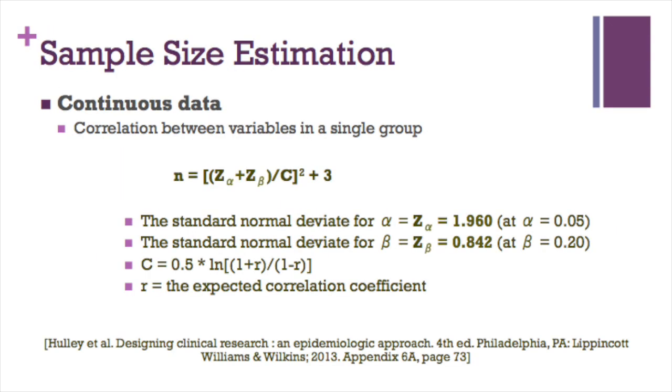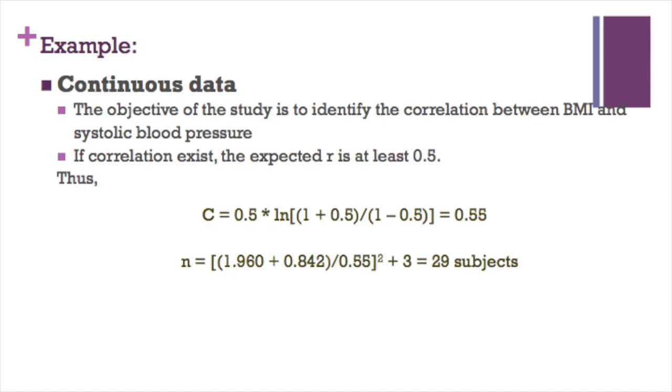To study the correlation between variables in a single group, we need to know the following: the standard normal deviate z alpha equals 1.960 at alpha equals 0.05, the standard normal deviate z beta equals 0.842 at beta equals 0.20, and r value is the expected correlation coefficient. For example, the objective of the study is to identify the correlation between BMI and systolic blood pressure. If correlation exists, the expected r is at least 0.5. C is estimated at 0.55. Thus sample size required is 29 subjects.